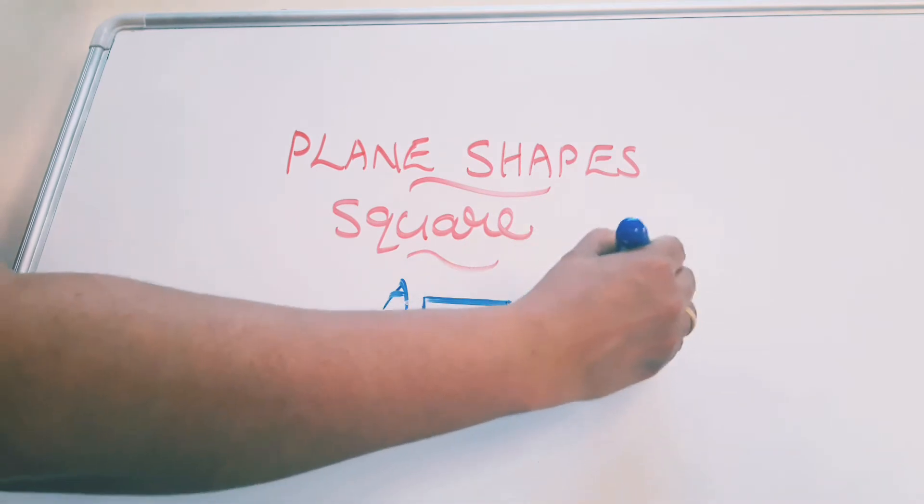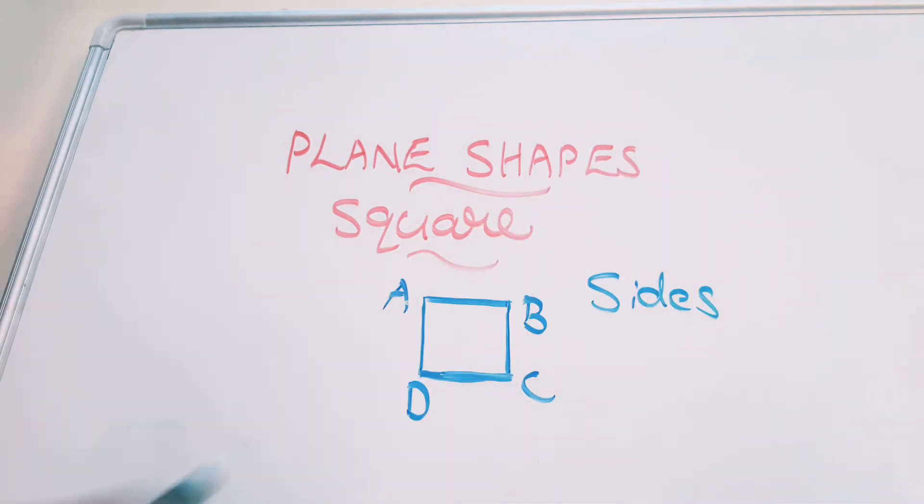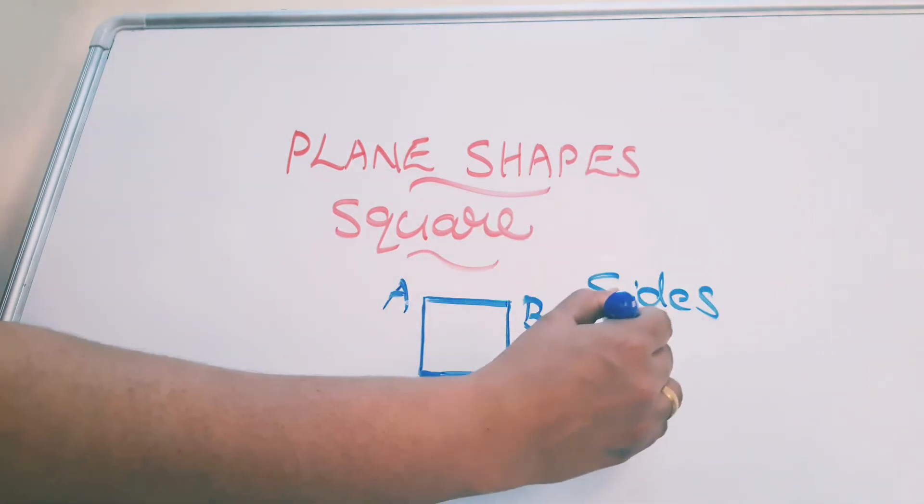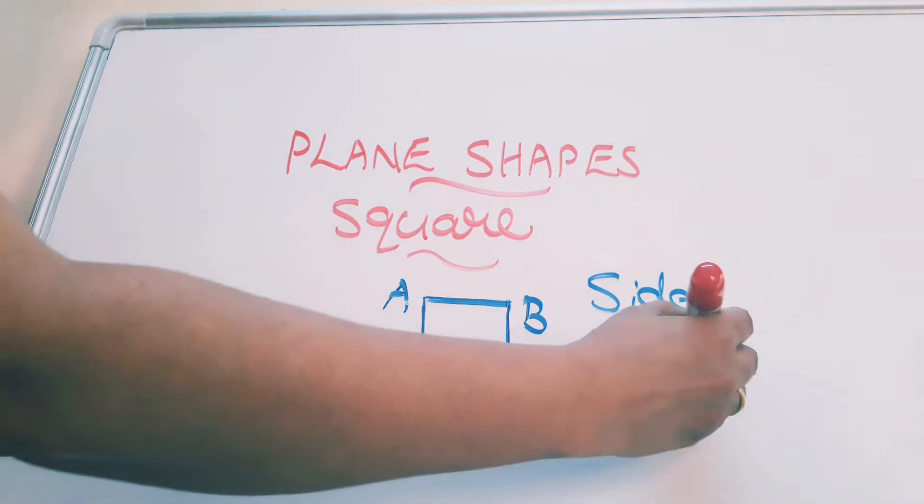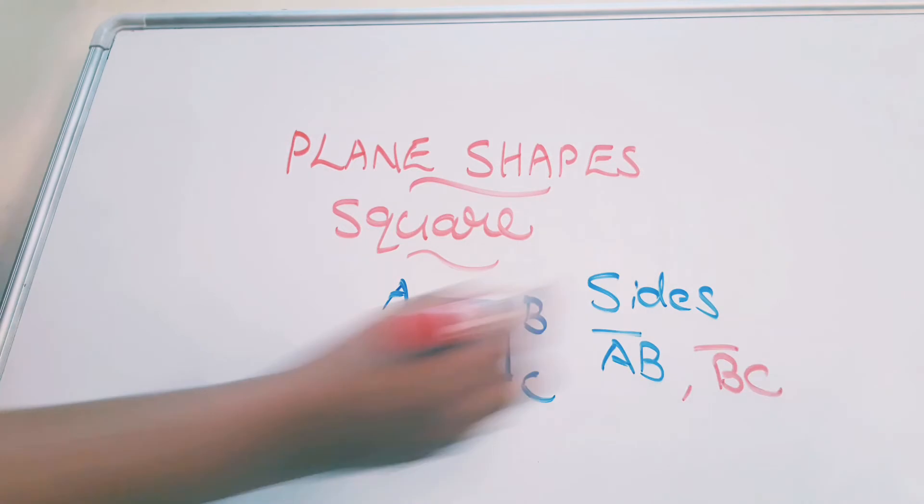Here sides. Four sides. All the four sides are equal in length. First one is AB or we can read it as BA also. Second one is BC. BC.